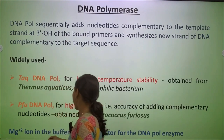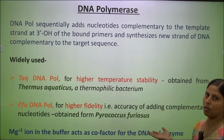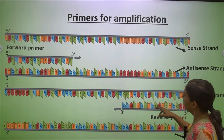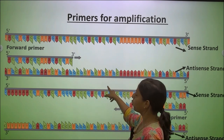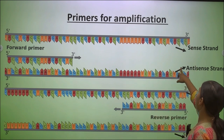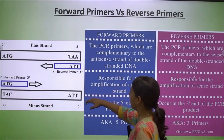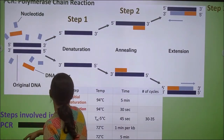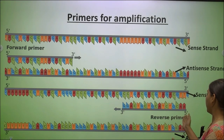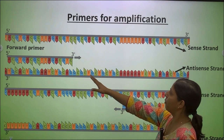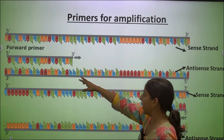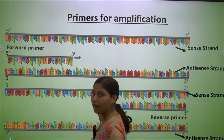Magnesium ion is used as a cofactor applied in the buffer for amplification. For DNA amplification, two primers are designed: a forward primer and a reverse primer. The forward primer is made complementary to the antisense strand, and the reverse primer is made complementary to the sense strand, both in the 5 prime to 3 prime direction. The forward primer corresponds to the beginning of the gene.